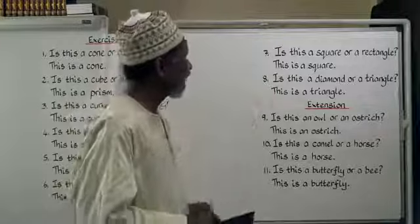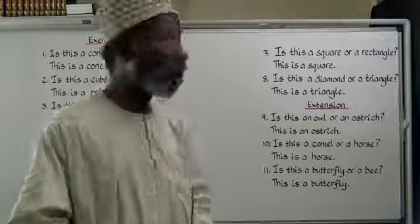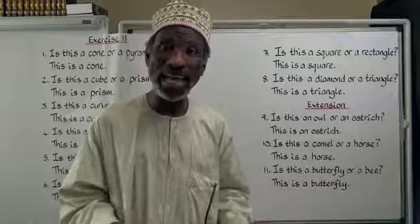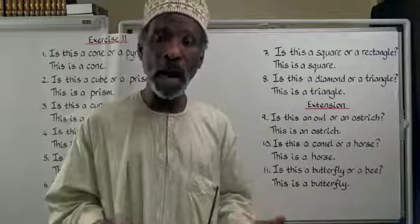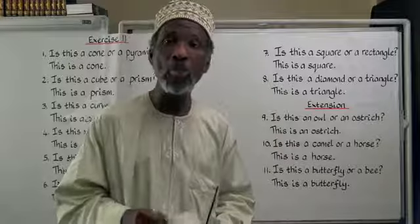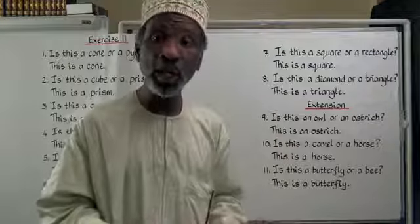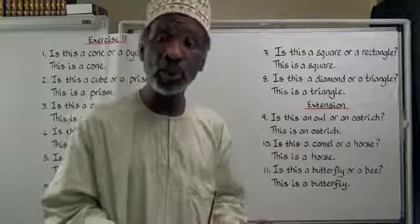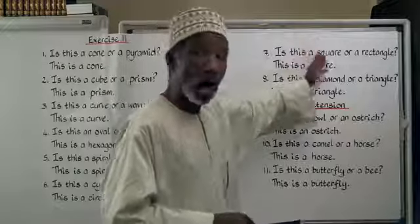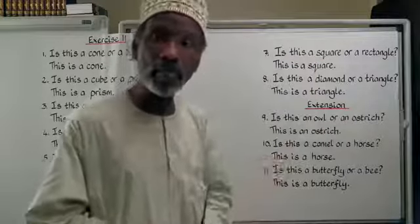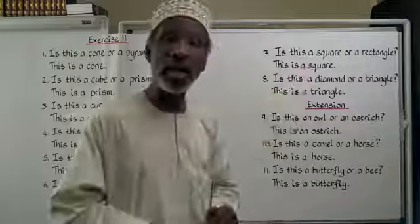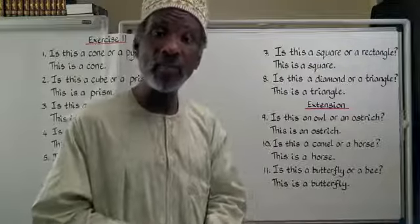Number 7: is this a square or a rectangle? A square is مُرَبَّعٌ and rectangle is مُسْتَطِيلٌ. هَلْ هَذَا مُرَبَّعٌ أَمْ مُسْتَطِيلٌ. This is a square — هَذَا مُرَبَّعٌ.